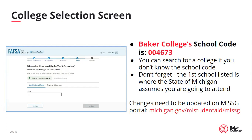Just another reminder: the first school listed on your FAFSA is where the state of Michigan assumes you're going to attend. If it is a Michigan school, that is where the state will plan to send any state grants and scholarships. If you decide to attend a different school than what you originally listed as number one on your FAFSA, you will need to update your choice via the MySSG portal.